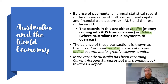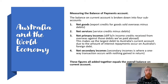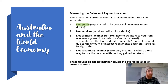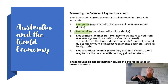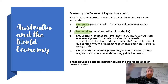Within the current account there are four sub-accounts. Net goods covers export credits for goods sold overseas minus import debits — all the physical goods we export versus goods we import. Net services is the same concept but for services. For example, students coming to study in Australia is an education export and therefore a service credit, whereas Australians going overseas as tourists to Disneyland in California is a service import and a debit from net services.